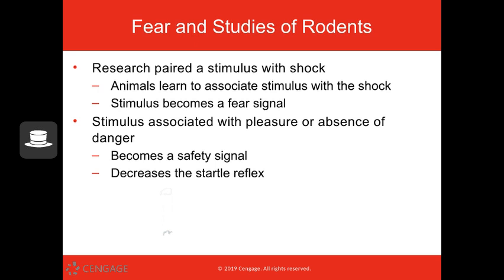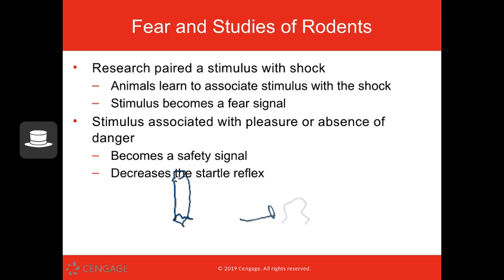When you associate things with pain or pleasure, your brain is going to say 'I'm safe now' or 'I'm not safe.' If every time you saw a quarter you got a cupcake, you'd feel safe. But once you get the pencil back, you'd feel 'something bad is going to happen.' Things associated with pleasure or the absence of danger decrease the startle reflex, telling our bodies to relax. The amygdala is getting signals from our visual cortices, auditory cortices, and the pathways that experience pain — all involved with feeling fear.